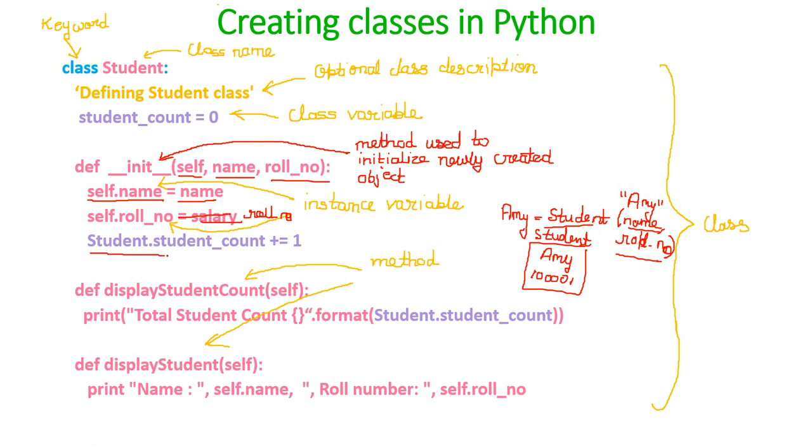Also, I have written one more line, Student.student_count plus equals to one. What it means is, every time when we create a new object, it will get incremented by one. The student count will get incremented by one.